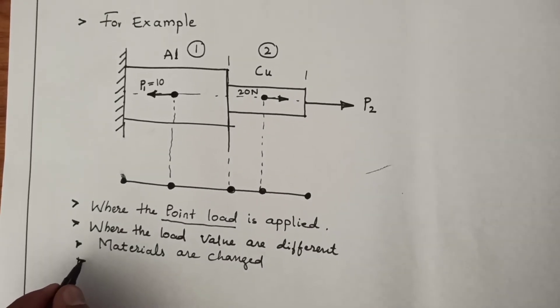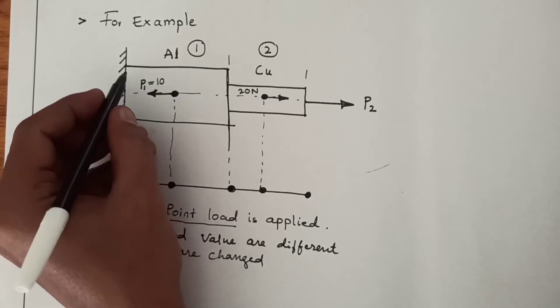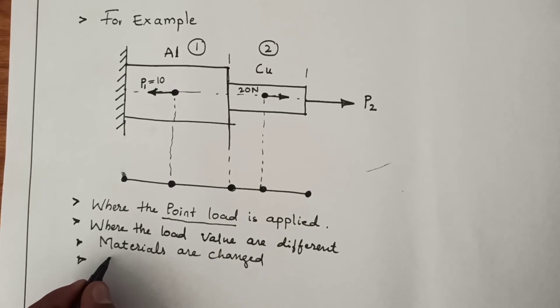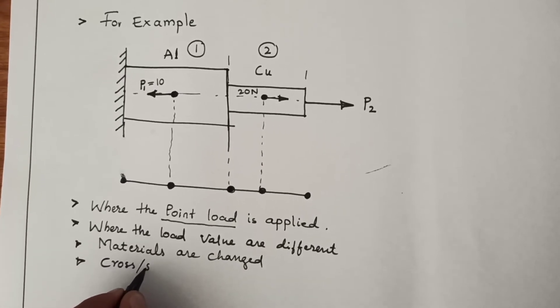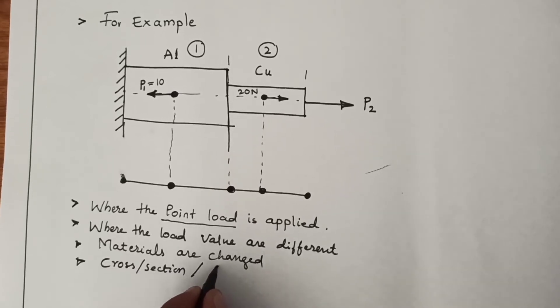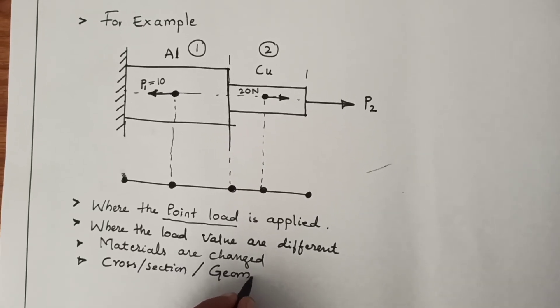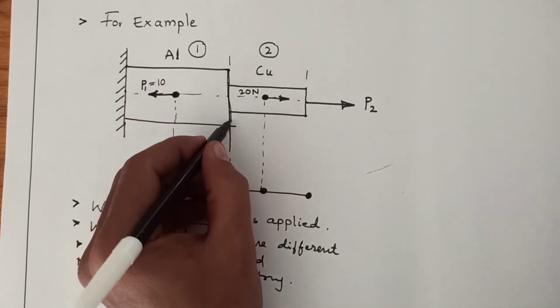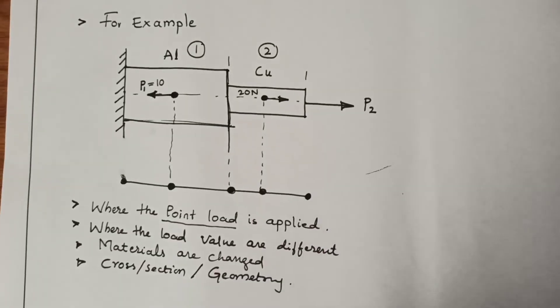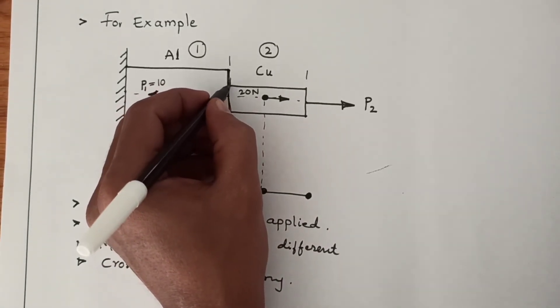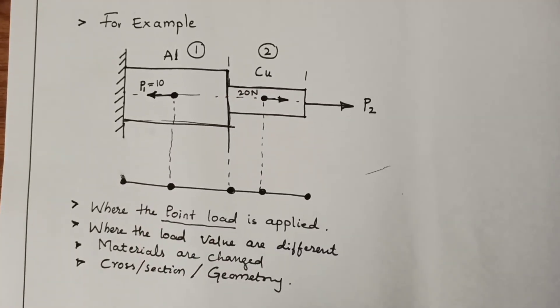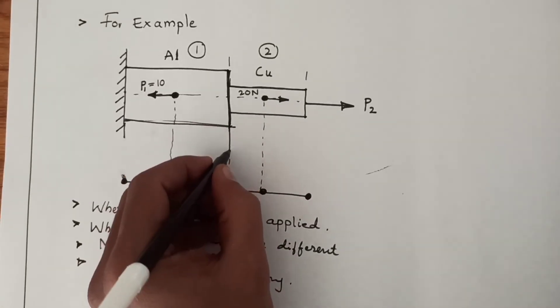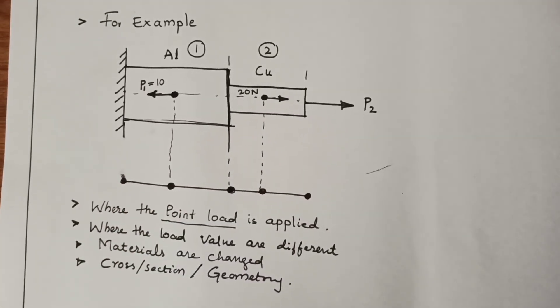And the next point is when the cross section or the geometry is changed. So here again this is where larger diameter and immediately it changes to another diameter. It means there the cross section is changed, so there also you have to take the nodes.